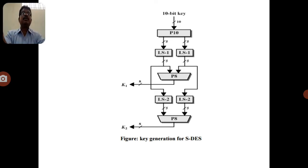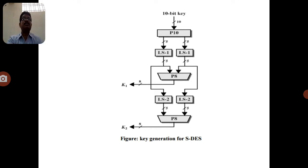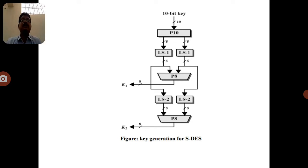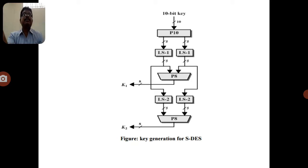In the conventional crypto system, we observed it is divided into two parts. The first one is the classical techniques and the second one is the modern techniques. Classical techniques encrypt alphabetical data, while modern techniques are applicable to encrypt binary data.